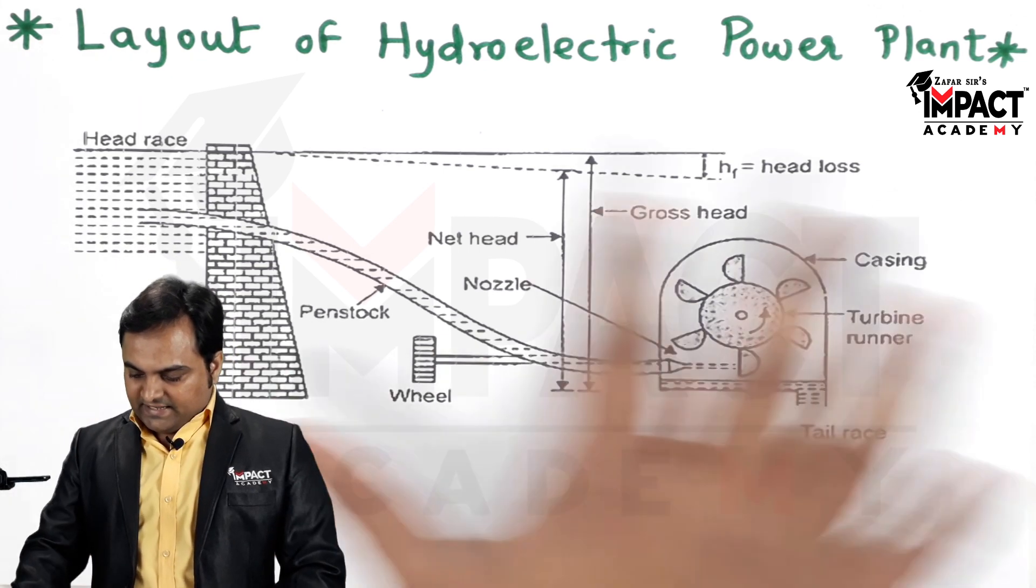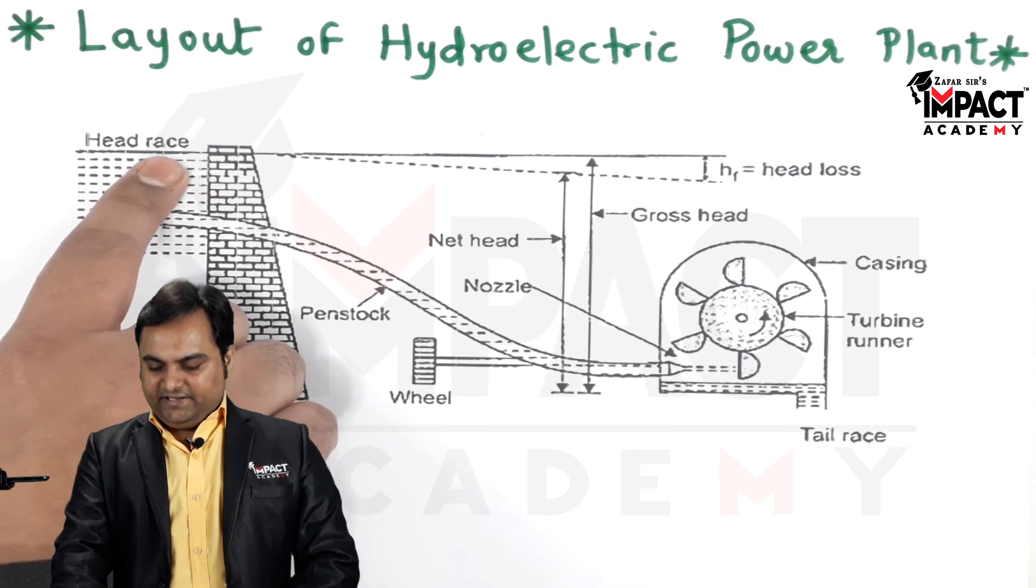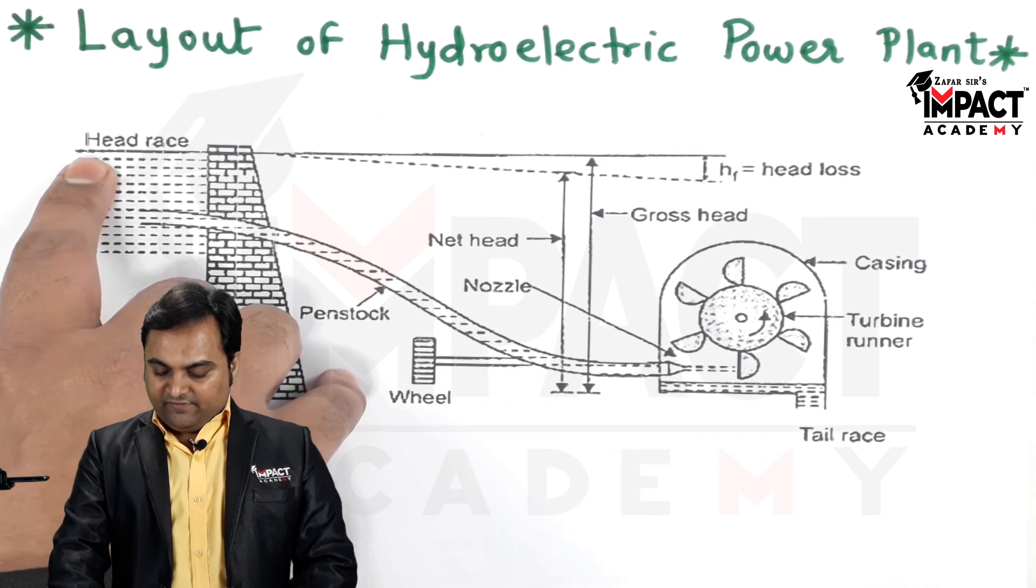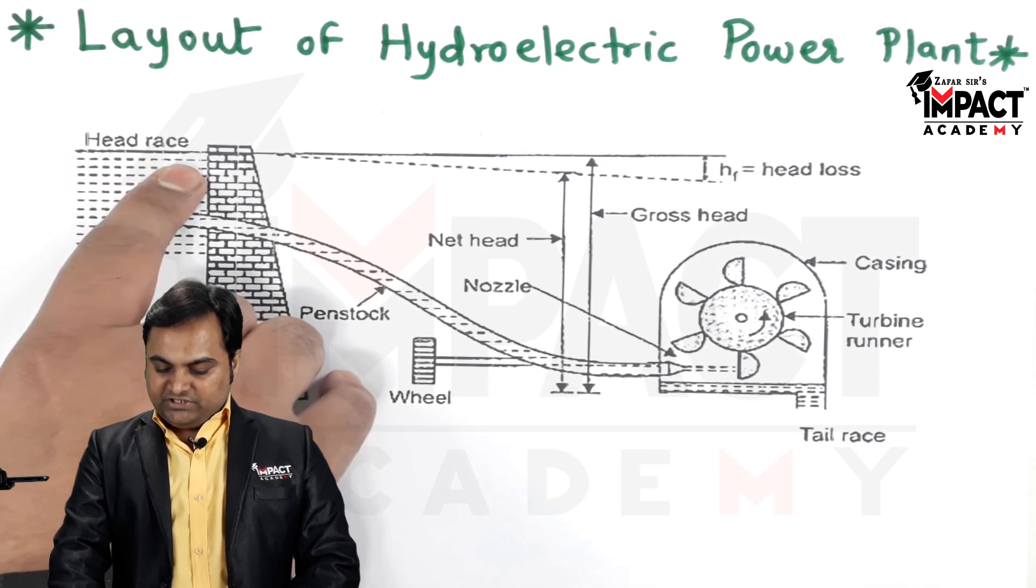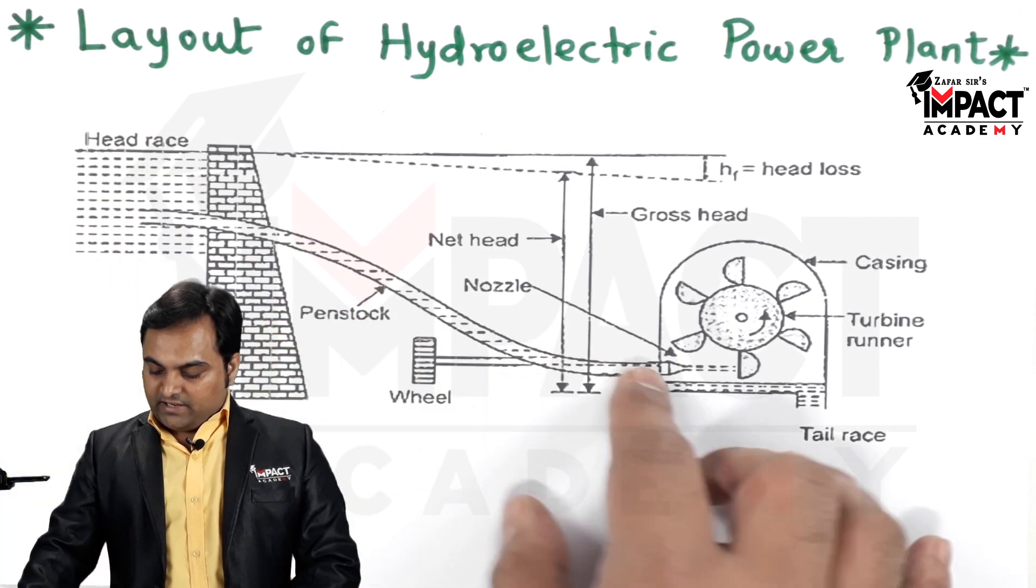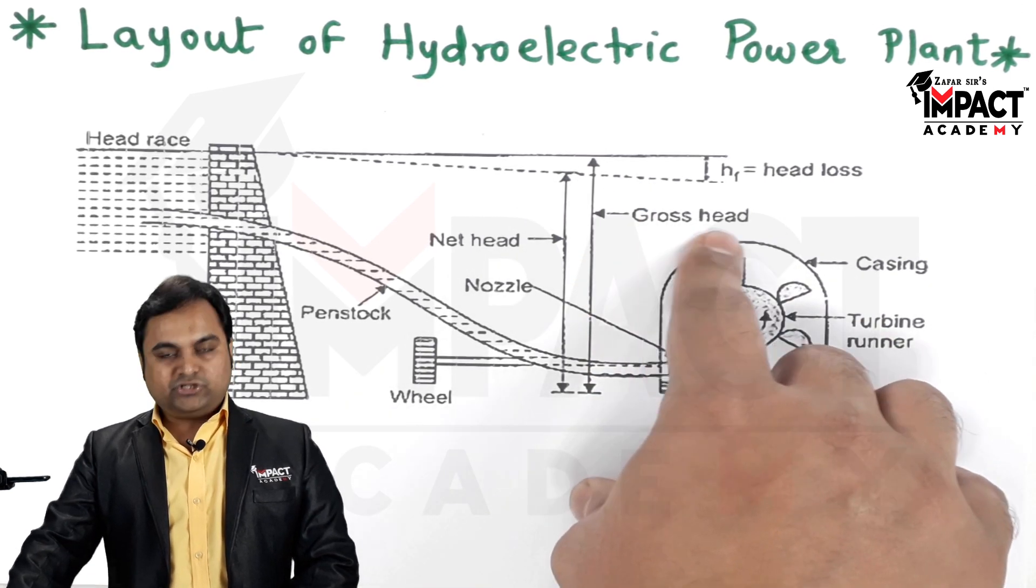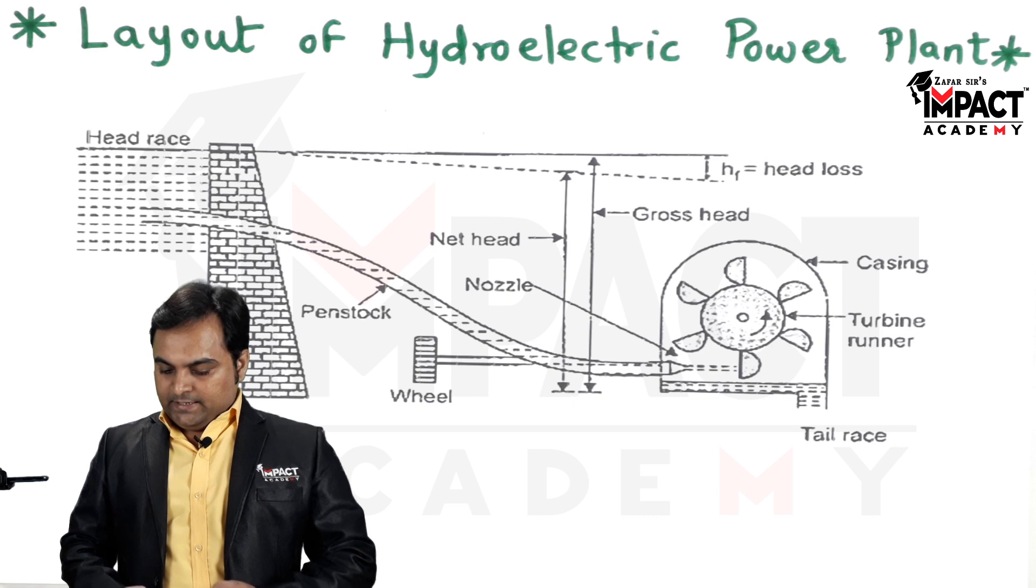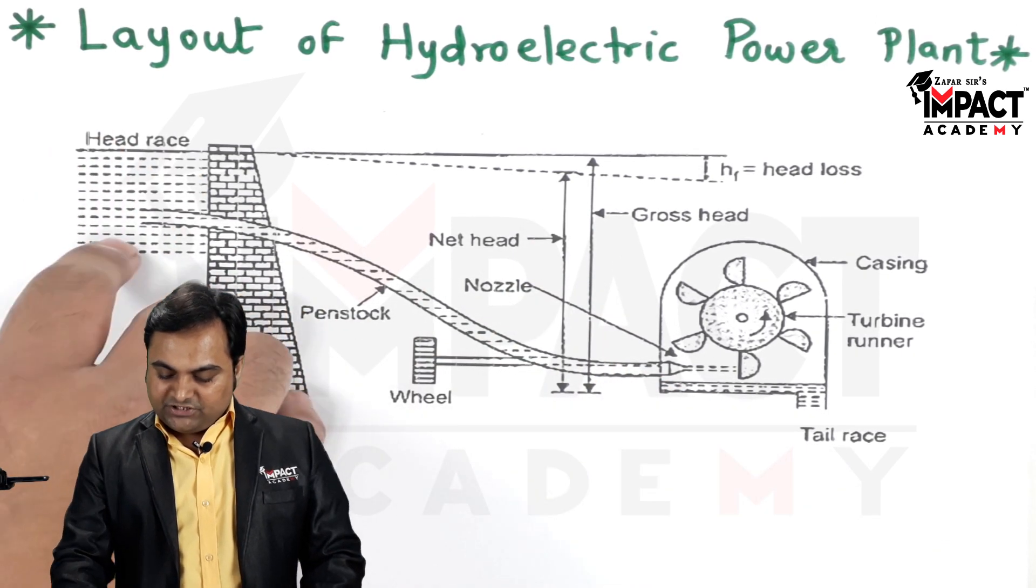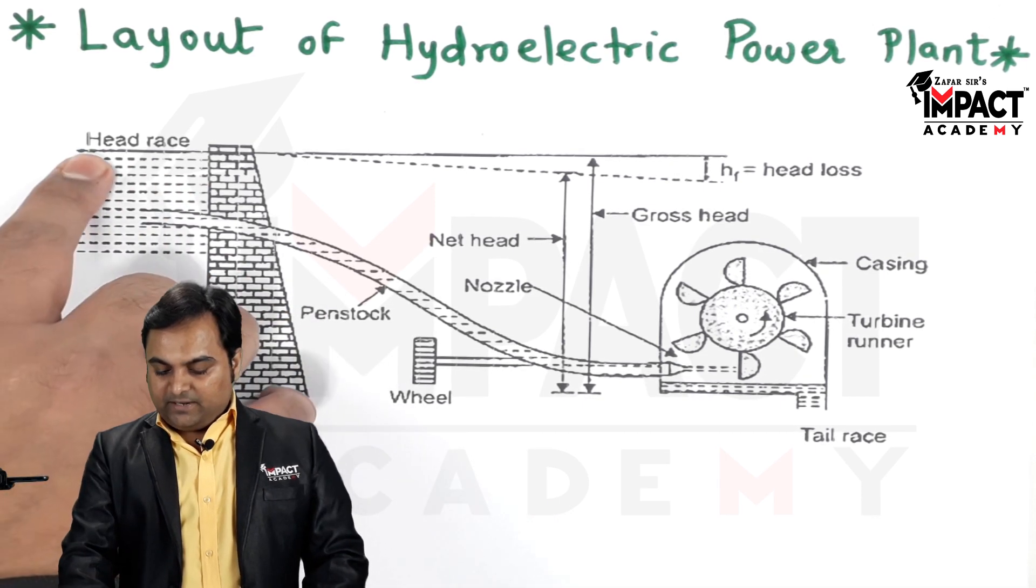As per the diagram which is available with us, here there is a head race. Head race indicates that from a datum up to the level of water which is there inside this reservoir or dam, and this height from the bottom or the datum is called as the gross head, also called as the total head. So at total head we can say that the potential energy of this water is maximum, that is up to the surface.